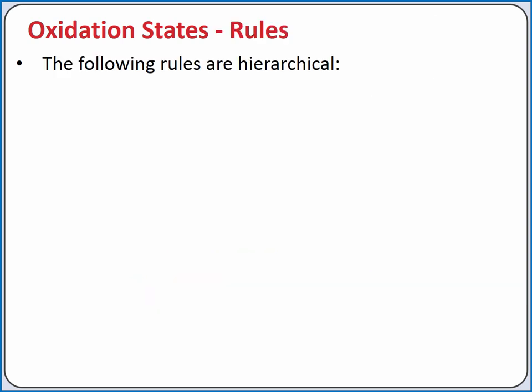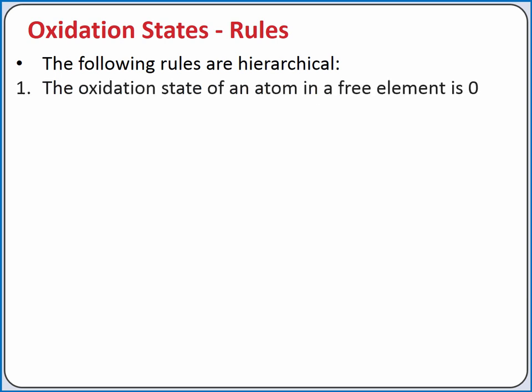We have five rules for assigning oxidation states. These rules are hierarchical, which means if two rules conflict, you apply the rule that's higher up on the list. Our most important rule is that the oxidation state of an atom in a free element is zero. Examples of free elements would be ozone (O3), solid iron, or liquid bromine. A free element could be a molecule, but it only contains one element.